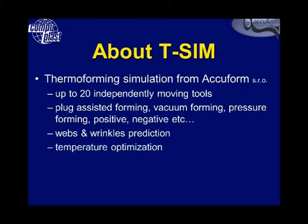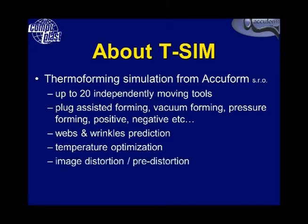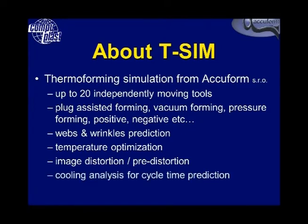We can perform temperature optimization. If we have pattern heating for our oven, the software will give an indication of what sort of pattern you should have on the initial part temperature distribution. We can also do image distortion and assist with image pre-distortion in developing parts that are sheets that are pre-printed. Finally, there is some cooling analysis which can aid in cycle time prediction.